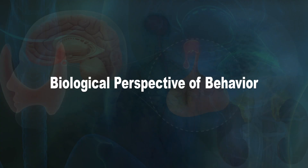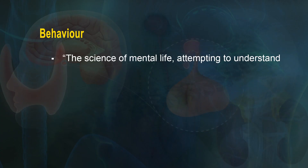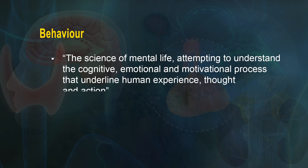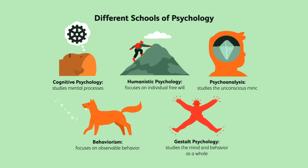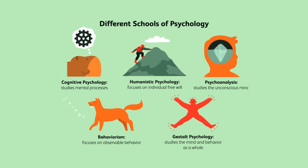Let us understand behavior from a biological perspective. The 19th century is when William James gave the first workable definition for psychology — that is, the science of mental life — attempting to understand the cognitive, emotional, and motivational processes underlying human experience, thought, and action. This provided a path for the different schools of psychology to explore the field in depth.